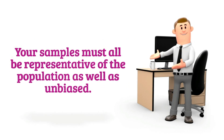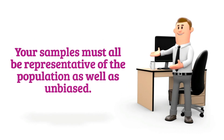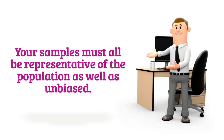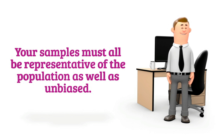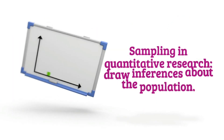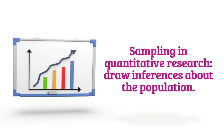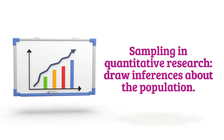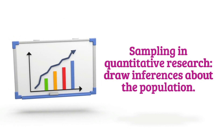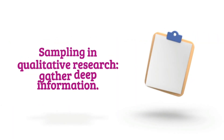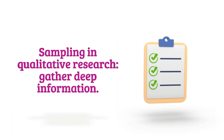To get high confidence in the accuracy of your result, your samples must all be representative of the population as well as unbiased. Sampling in quantitative research aims to draw inferences about the population from which samples are selected. Sampling in qualitative research aims to gather deep information.